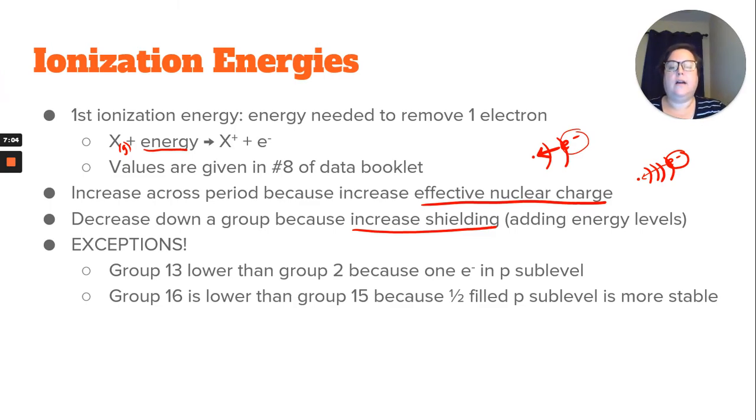Now there are some exceptions, just like there were exceptions with our electron configuration. So group 13 is actually lower than group 2. We're ignoring the transition metals because that's a whole other ballgame. But group 13 is lower than group 2, and the reason why is because group 2 has a full S sublevel. So if we think about it, it has these two paired electrons. And that's going to be more stable than having just a single electron in the P. So group 13 is able to lose that lone electron in the P sublevel easier than group 2 can lose one of its paired electrons.